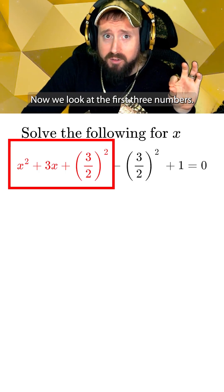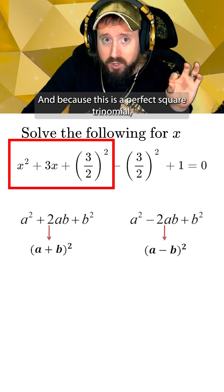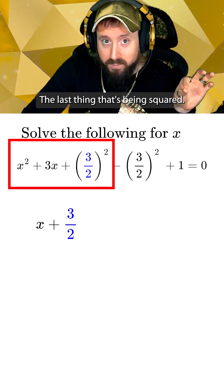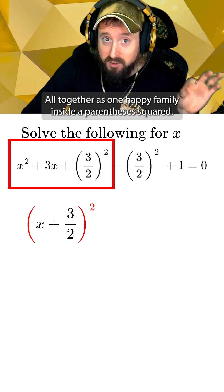Now we look at the first three numbers and because this is a perfect square trinomial we can write it as the first thing that's being squared plus or minus the last thing that's being squared all together as one happy family inside a parentheses squared.